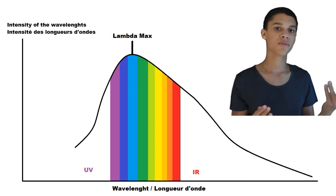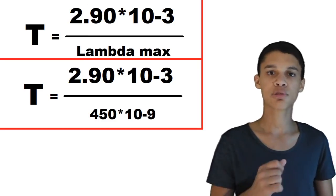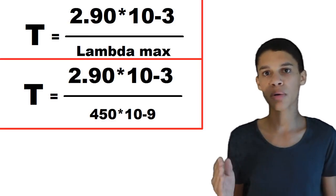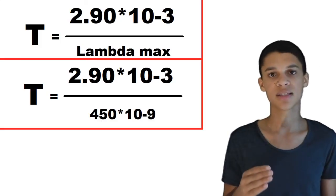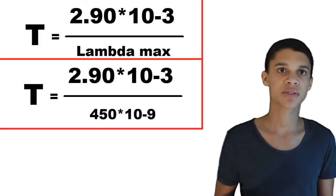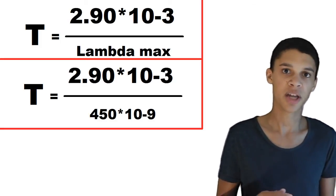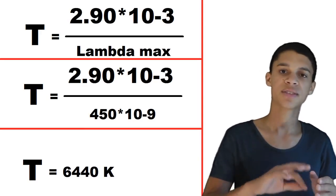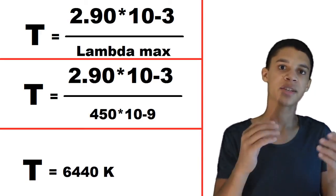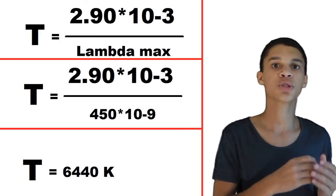So lambda max is 450 nanometers. Since we know the equation to calculate the temperature when you have lambda max — which is Wien's Law — T equals 2.9 times 10 to the negative third power divided by lambda max in meters, which is 450 times 10 to the negative ninth power. The equation gives us around 6440 Kelvins.